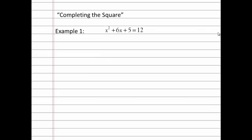So let's take a look at an example. First thing that I'm going to do is I'm going to move the constant term over to one side, so I'll subtract 5 from both sides of my equation here. And then when I do that, that leaves me with x² + 6x = 7.